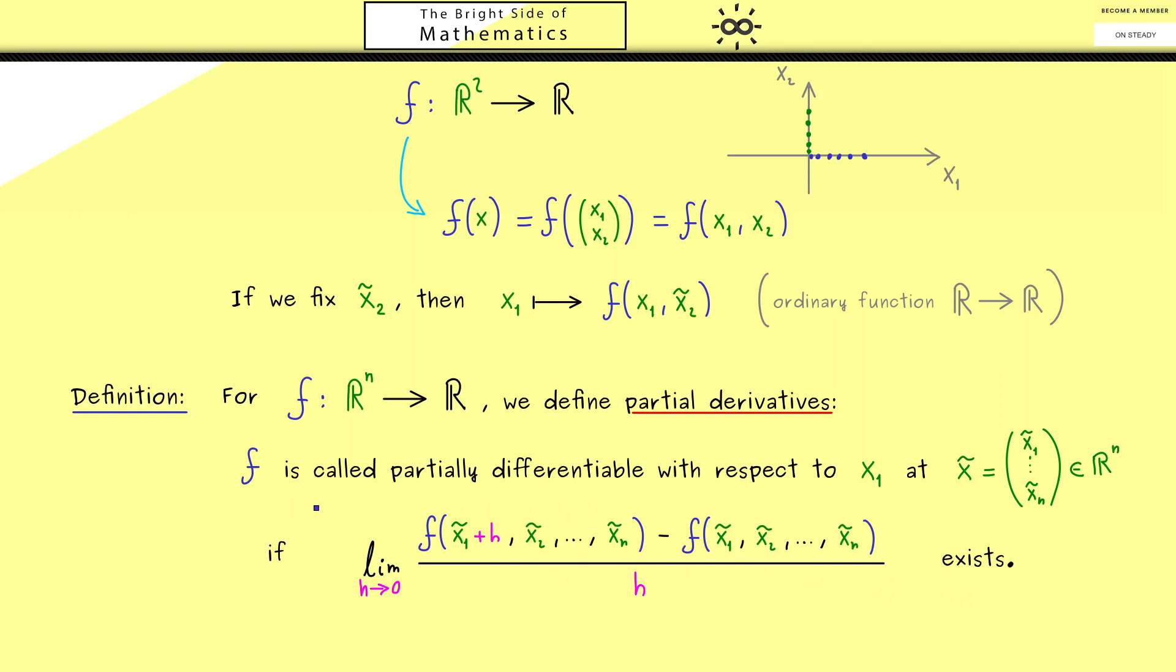So in summary, if this ordinary differential quotient, where all the other variables are fixed, exists, then we call f partially differentiable with respect to the given variable x₁. Moreover, there you should see it's no problem at all to write down this definition for all the other variables, like x₂, x₃, and so on. For this reason, I don't want to do it here explicitly.